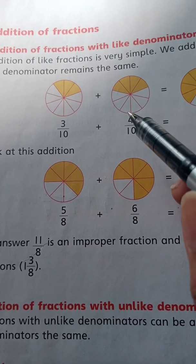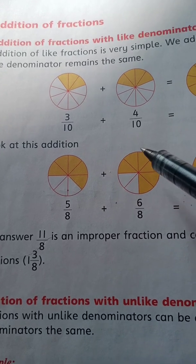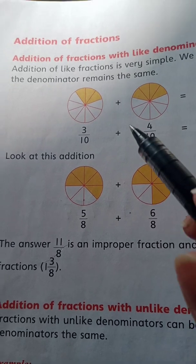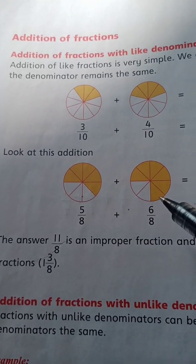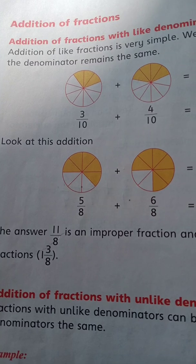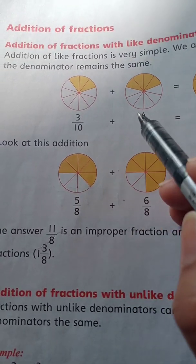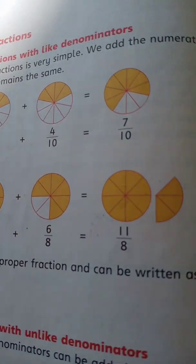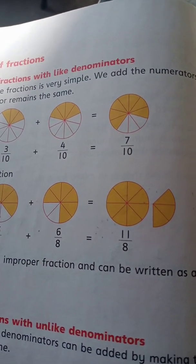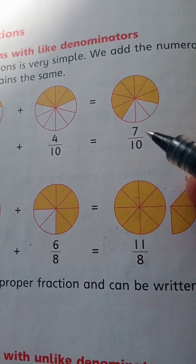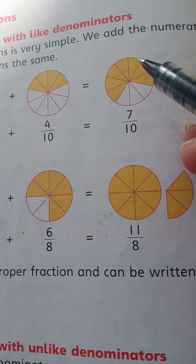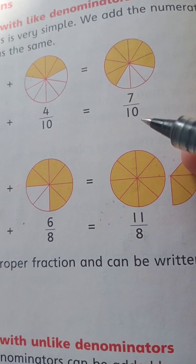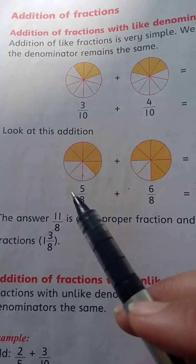Isi tarah yahan par bhi total parts ten hain jo denominator mein likhi hain aur shaded parts four hain jo numerator mein likhi hain. Like fractions ko add karna bahut easy hai — hum sirf unke numerators ko add kar lete hain aur denominator ko usi tarah likhte hain. 3 plus 4 kya hoga? 7 divided by 10 hi likhenge — 10 plus 10 nahi karenge. Toh 7 by 10 aa gaya. Is ki figure mein total parts 10 honge aur shaded 7 honge.